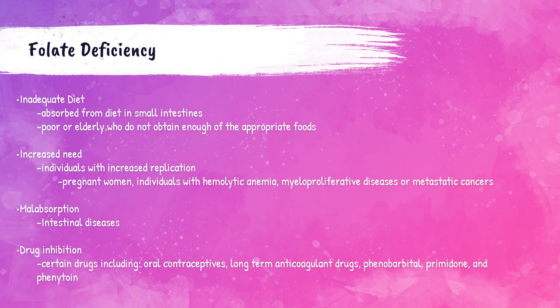A folate deficiency can develop from not eating enough folate in the diet. Folate is absorbed in the small intestines, so if the patient isn't eating enough folate-rich foods or taking supplements, there won't be enough in the body. This can occur in elderly patients or those who are poor. It also occurs in people with an increased need for folate, like those who are pregnant, or patients with hemolytic anemia or cancer. Patients with intestinal diseases can become deficient due to malabsorption.